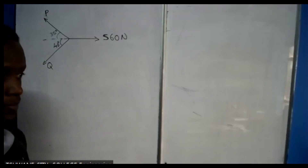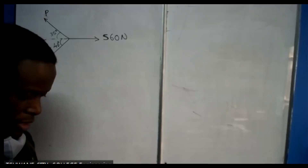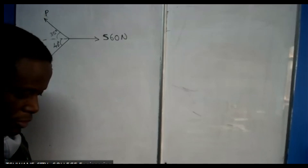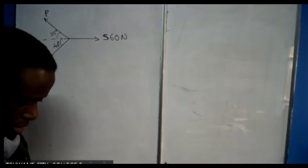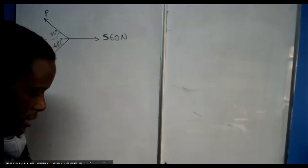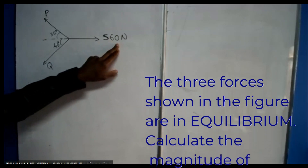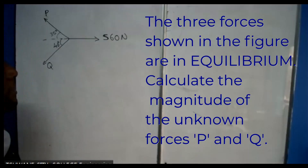Hi guys, I just want to quickly show you how we can calculate the values of P and Q if these forces are in equilibrium. Let me read the statement again. This question says: the three forces shown in this figure are in equilibrium — P is one force, Q is another force, and 560 N is the third force.